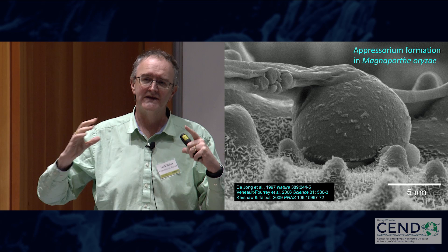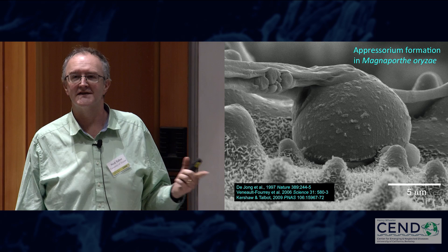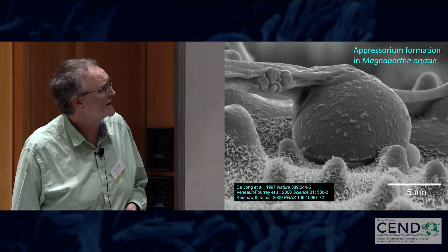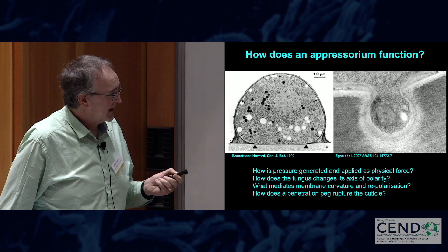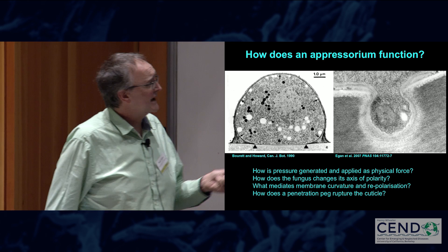Magnaporthe is perfectly capable of breaking inert surfaces — it can break thin plastic layers — so it doesn't need to use enzymes to degrade the cuticle; it can do this using physical force. The appressorium applies its penetrative force at a single point at the base: the appressorium pore. That raises questions about how the fungus changes its axis of polarity to gain entry to rice tissue.